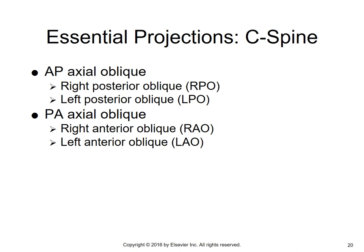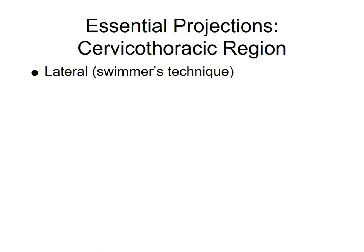Remember: AP projection means the central ray enters anteriorly on the patient and exits posteriorly, and PA would be the opposite. We'll also talk about the lateral swimmers for the cervical-thoracic region radiograph.